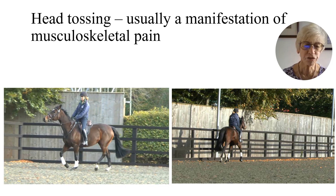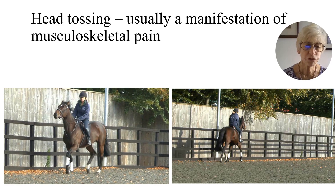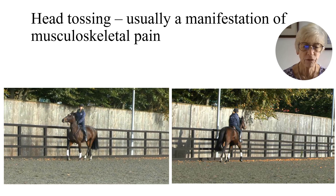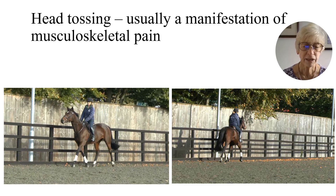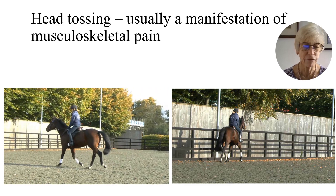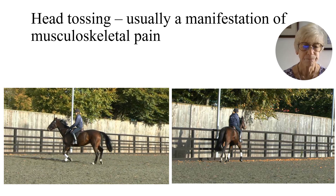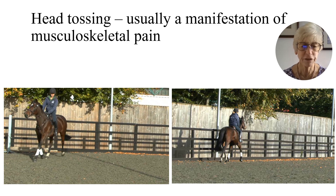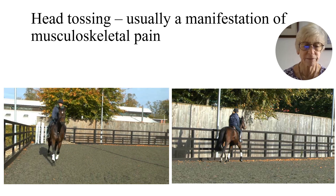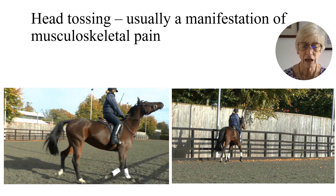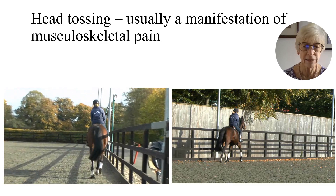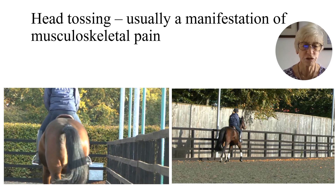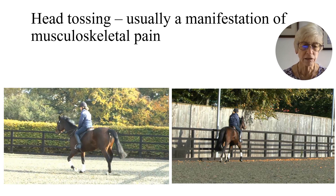This head-tossing behaviour was consistently worse on the left rein compared with the right rein. We can see that the horse did a little skip in front, elevating its forelimbs. This was a consistent feature on a day-to-day basis, and did not vary in severity or with environmental conditions, whether sunny or overcast.